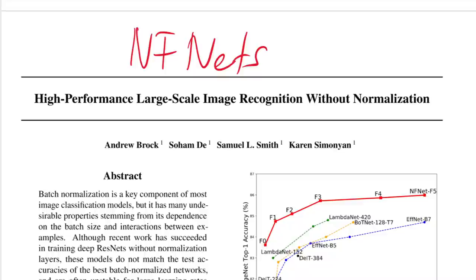Hi there. Today we're looking at 'High Performance Large Scale Image Recognition Without Normalization' by Andrew Brock, Soham De, Samuel L. Smith, and Karen Simonyan of DeepMind. This is otherwise known as NF-Nets — normalizer-free networks.